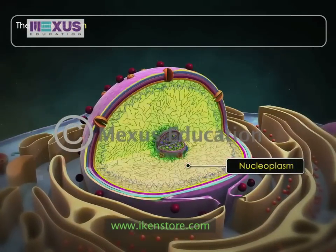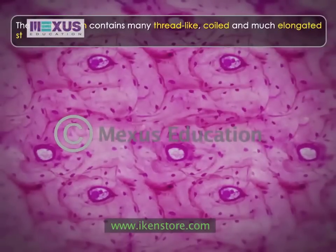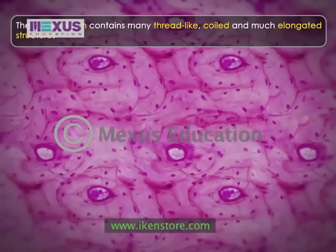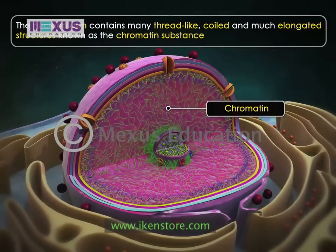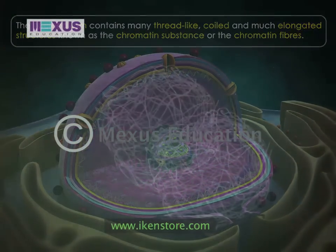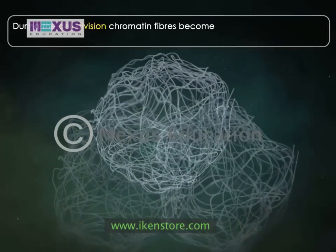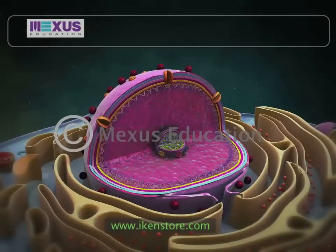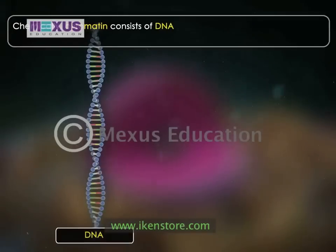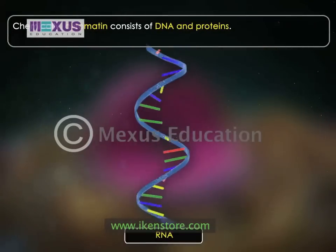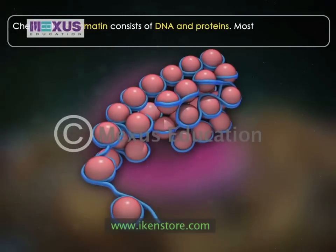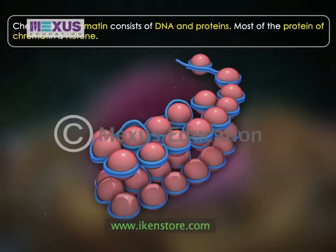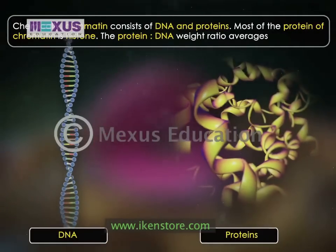The nucleoplasm contains many thread-like, coiled, and much elongated structures which stain readily with basic stains such as basic fuchsin. These are known as the chromatin substance or chromatin fibers. During cell division, chromatin fibers become thick ribbon-like structures known as chromosomes. Chemically, chromatin consists of DNA and proteins. A small quantity of RNA may also be present. Most of the protein of chromatin is histone, but non-histone proteins are also present. The protein-DNA weight ratio averages about 1:1.